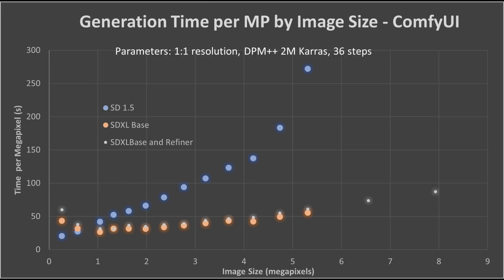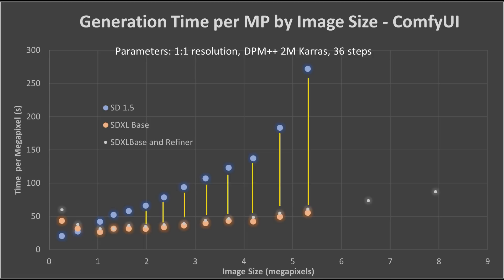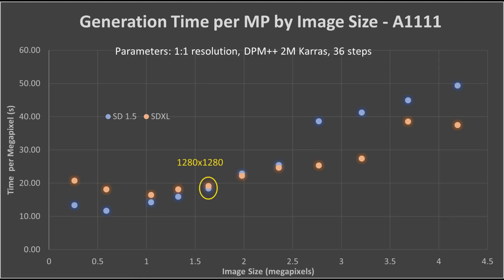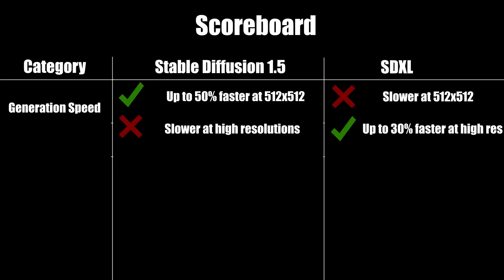Comparing SDXL to Stable Diffusion 1.5 directly: for ComfyUI, SD 1.5 is actually 50% faster than SDXL at 512x512. However, at SDXL's native resolution of 1024x1024, SDXL is already 30% faster, and that lead only widens at higher resolutions. For Automatic1111, things are much more competitive — SDXL is slower at lower resolutions by about 35%, performance is roughly equal around 1200x1200, then SDXL takes a firm lead of around 30% at resolutions above 1500x1500. Overall I would call this a draw. Many comments about SDXL being fast are likely due to ComfyUI being used instead of Automatic1111.